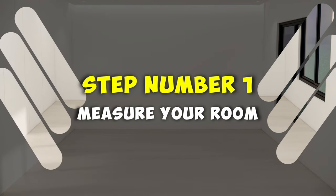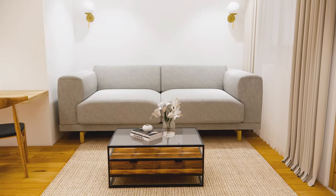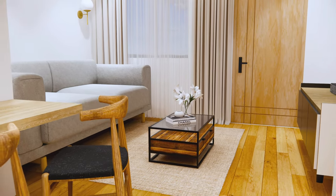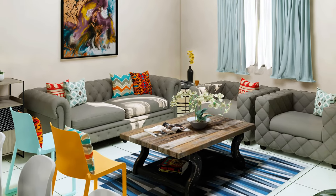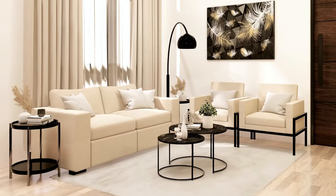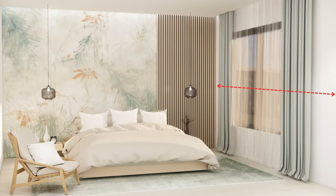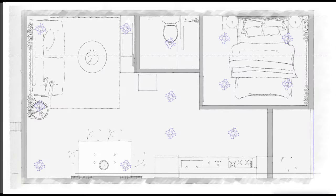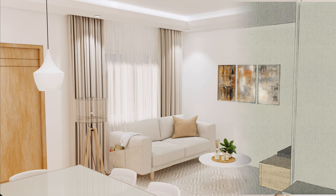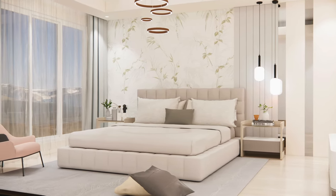Step number one: measure your room. Honestly, this is where most people mess up at home. Ever had a couch that's way too big for your room? Or a table that looks too tiny next to everything else? Often that's because no one measured the space properly. So measuring your room is key. You just need to take three measurements — the length, the width, and the height of your room — then sketch a basic floor plan. This gives you a visual representation of your room's dimensions and layout, helping you determine the appropriate size of furniture and accessories.